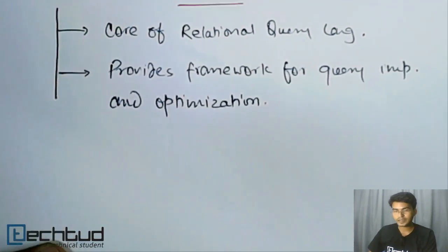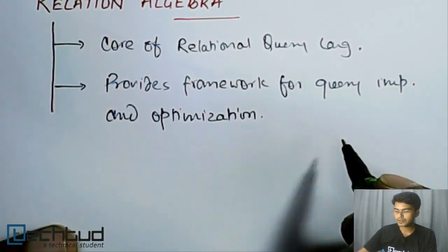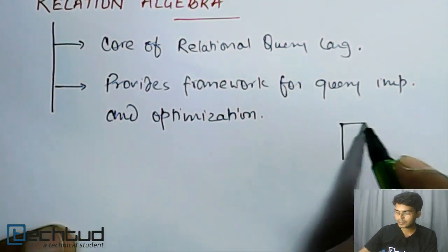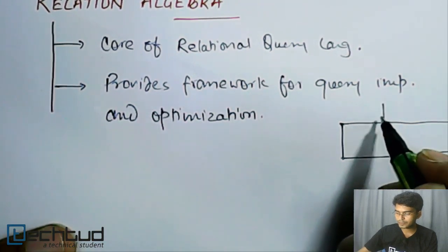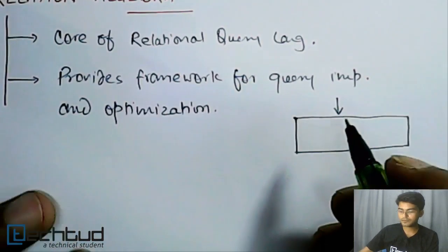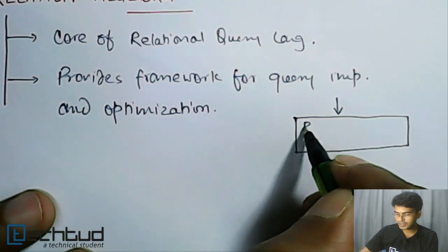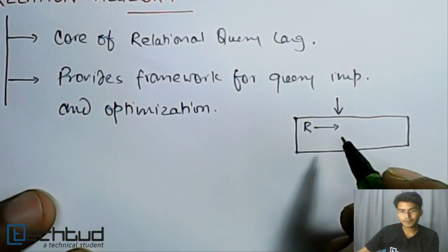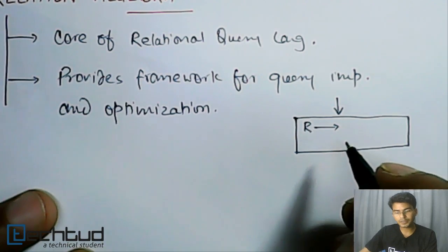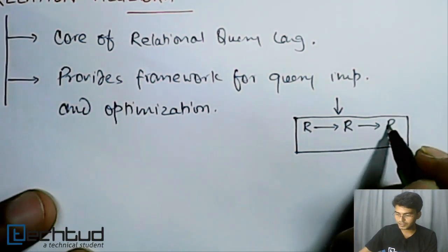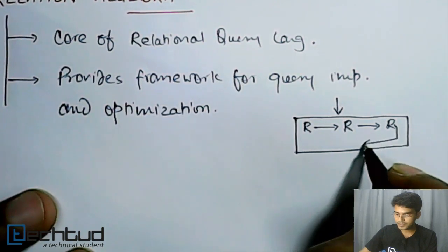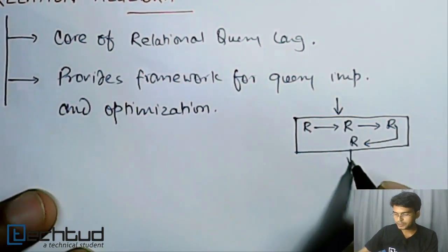As we have already discussed, inside any query language when you make a query, imagine you are making a query on this system. This system will internally take this relation and perform many sequences of relational algebraic expressions. The intermediate forms will also be relations, and finally from this relation it gives you output.